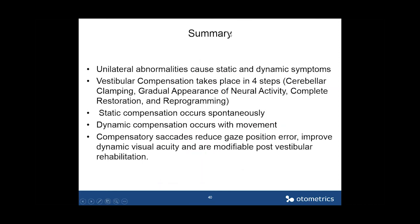In summary: unilateral abnormalities cause both static and dynamic symptoms. Vestibular compensation takes place in four steps — cerebellar clamping, gradual appearance of neural activity, complete restoration, and reprogramming. Static compensation occurs spontaneously and dynamic compensation needs to occur with movement. Compensatory saccades reduce gaze position error, improve dynamic visual acuity, and are modifiable post-vestibular rehabilitation.